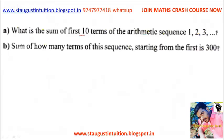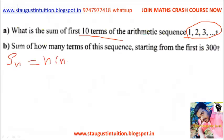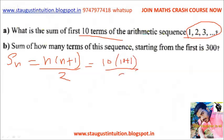What is the sum of the first 10 terms of the arithmetic sequence 1, 2, 3? We will write a formula. Sn is equal to n into n plus 1 divided by 2. That formula gives us 10 into 10 plus 1 divided by 2. Because n equals 10, we write 10 into 10.